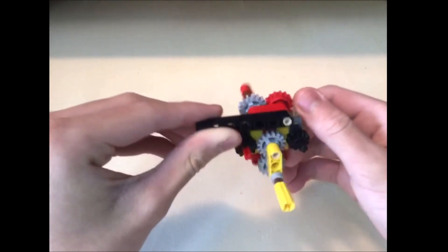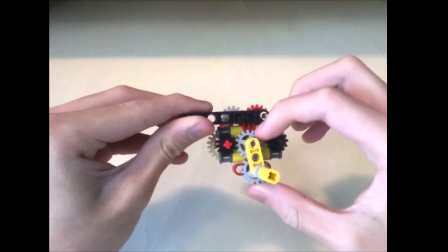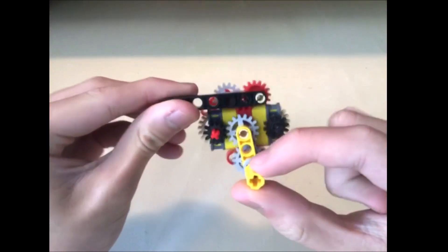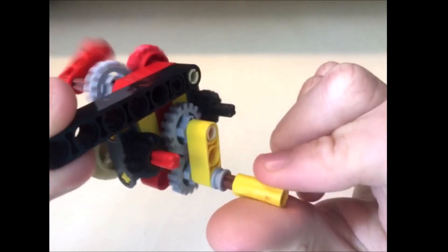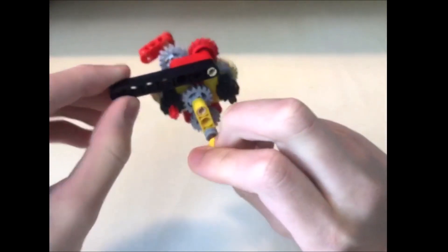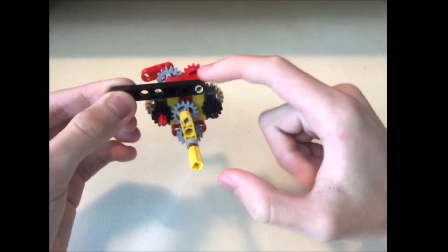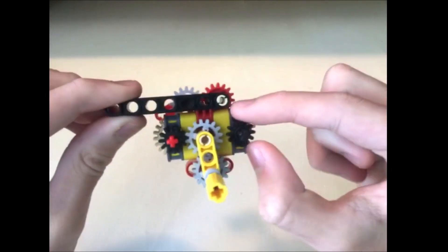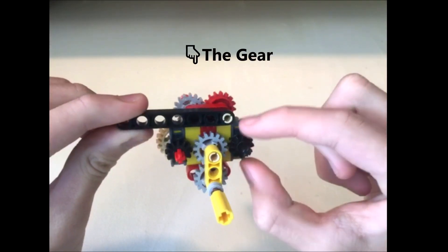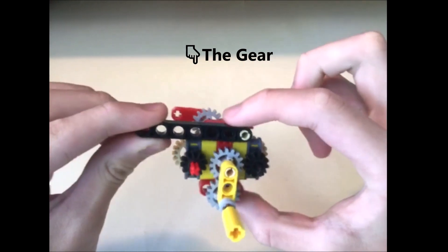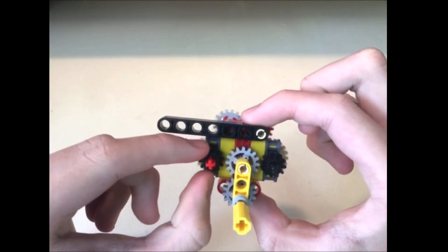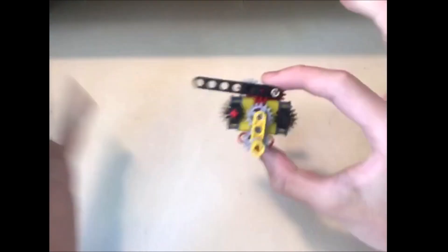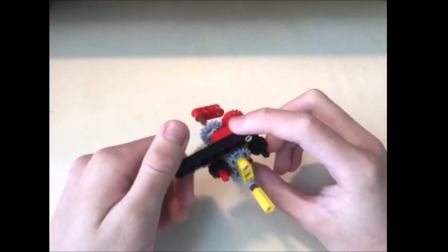So back to this 16-tooth gear. You can see, every time it tilts back and forth, it pushes this 12-tooth gear to turn. But the funny thing is, they are connected with 4 gears. When you turn this axle clockwise, the gear turns clockwise. But if you turn this axle anticlockwise, the gear also turns clockwise. And this is very clever.